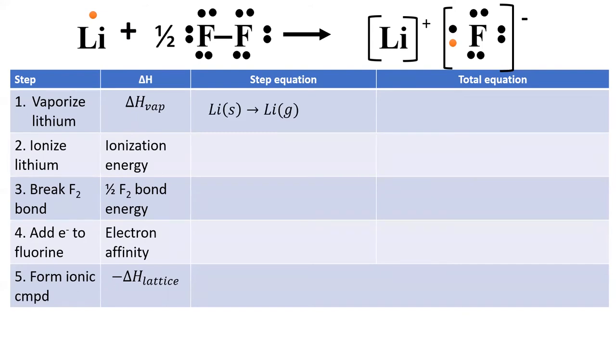Chemicals cannot react when they are a solid. Lithium is naturally a solid, so the first step in the Born-Haber cycle is to vaporize lithium, which takes an amount of energy equal to lithium's enthalpy of vaporization. The next step is the one we're familiar with. We ionize lithium by removing an electron. This forms lithium ion and a free electron and takes the amount of energy indicated by lithium's ionization energy. Lithium is now ready to form an ionic bond.